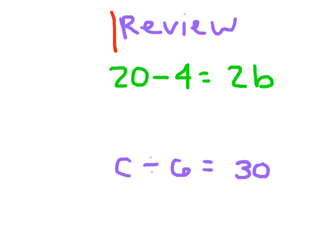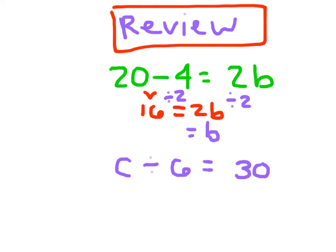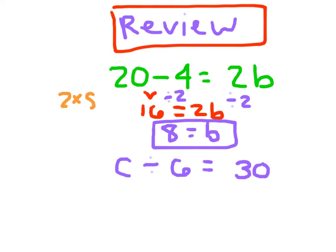Here's your review. We have 20 minus 4 equaling 2B. I can simplify the left side: 20 minus 4 is 16, so 16 equals 2B. Remember that 2B means 2 times B — a common student mistake to forget that. We divide both sides by 2, which leaves just B on the right-hand side. 16 divided by 2 is 8, so B equals 8. Check: 2 times 8 is 16, which does equal 20 minus 4.